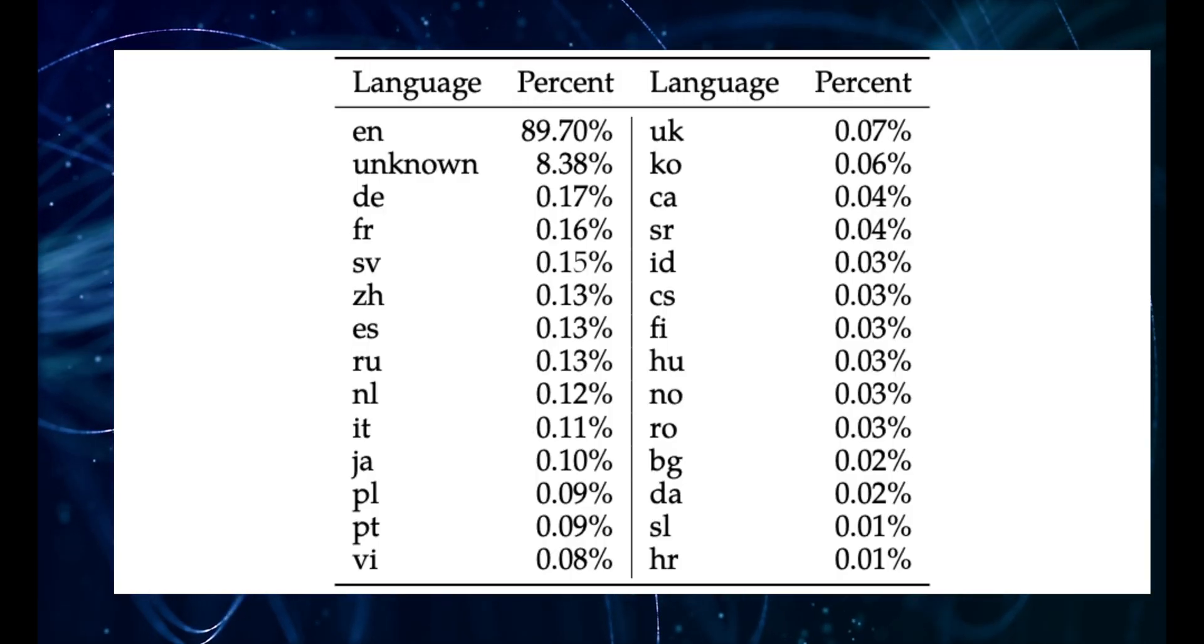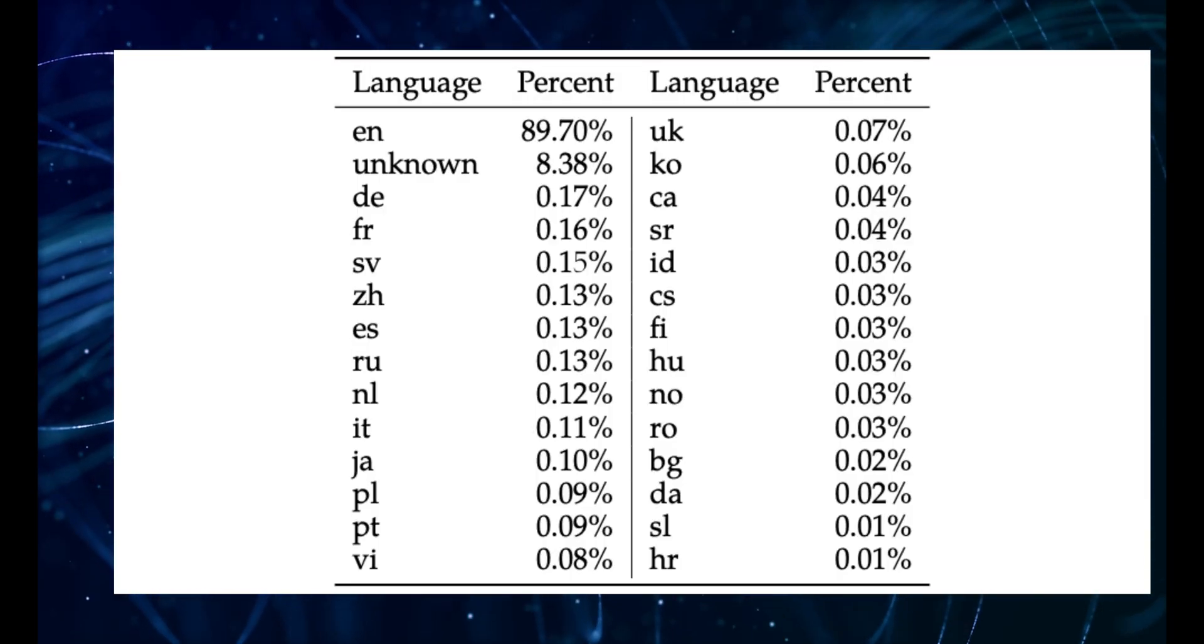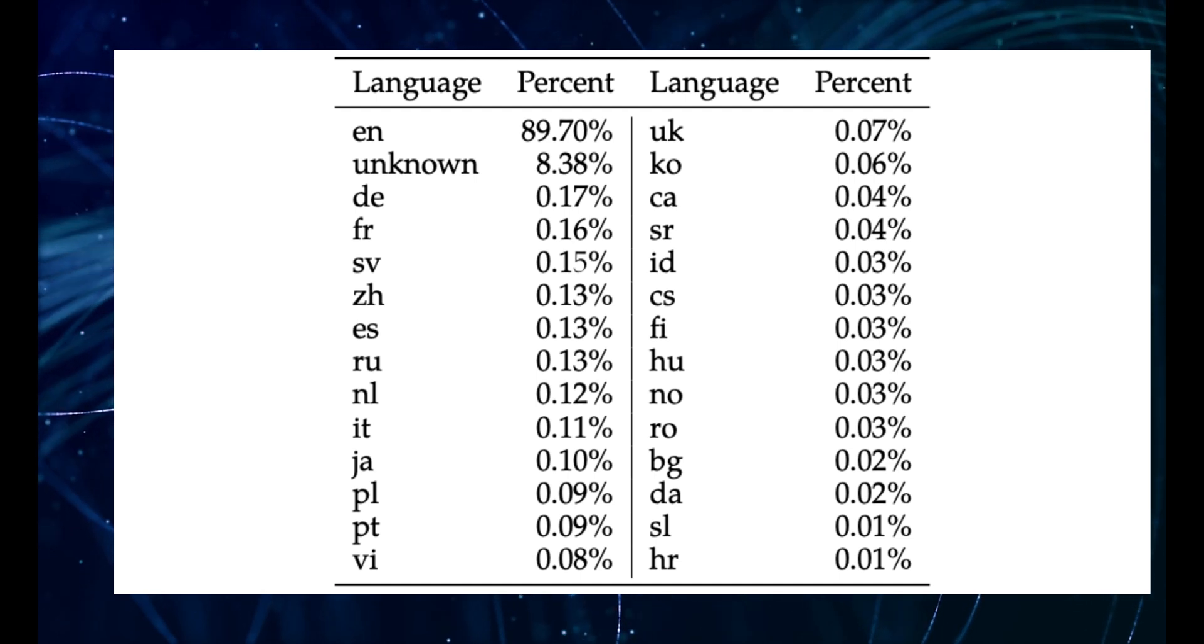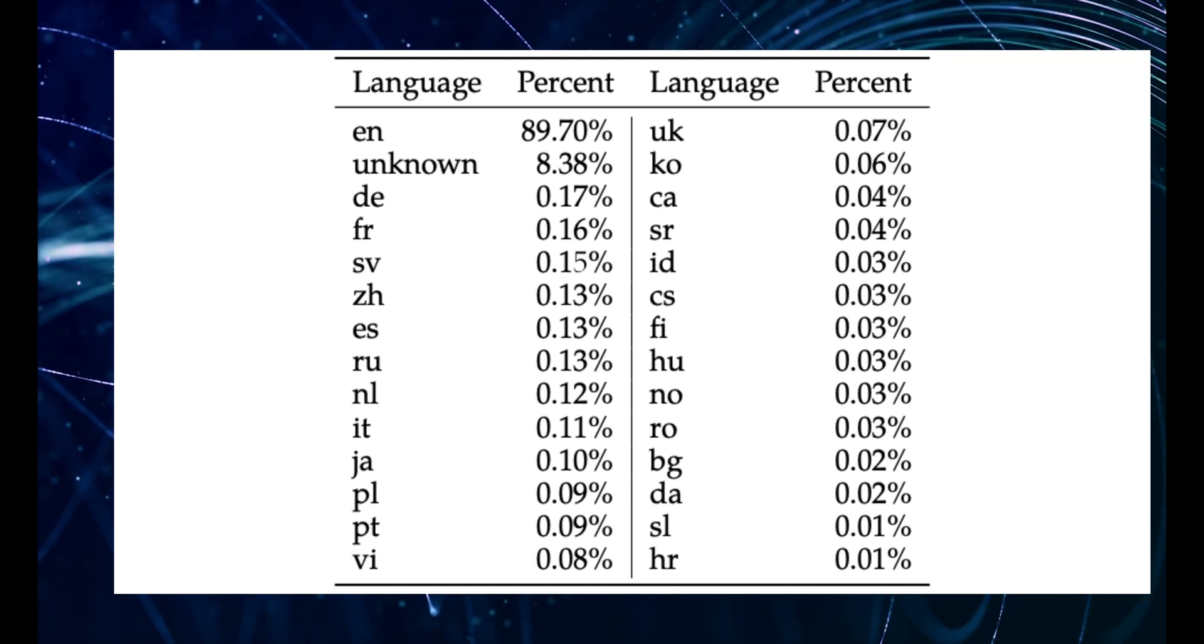Oh, and almost everything is in English. The whole AI world right now is super biased towards English. So other languages are kind of left behind. It's a whole other issue, really.